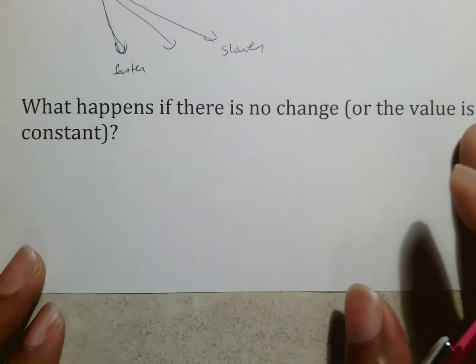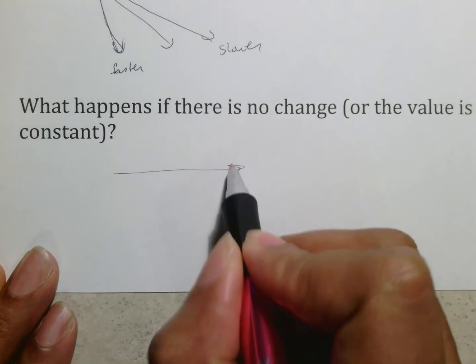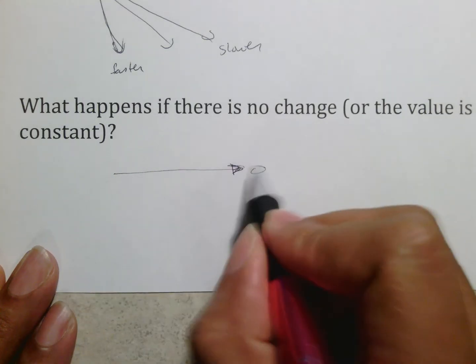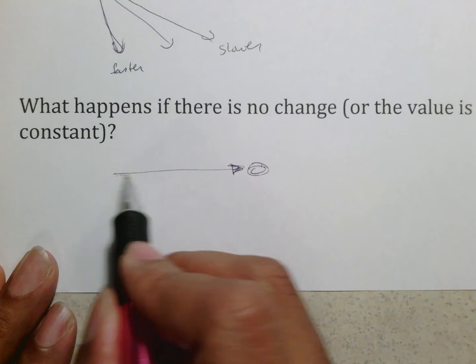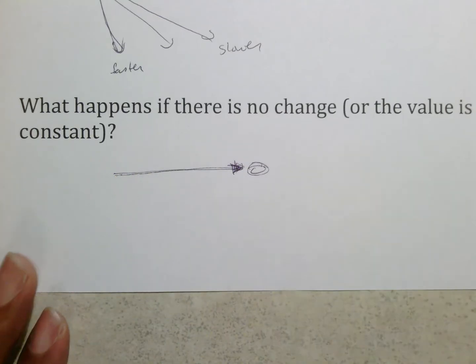What happens if there is no change or the value is constant? That means as time goes on, it's going to go straight. We will eventually call this zero slope. Because zero slope means it is not changing at all. Time just moves forward kind of like a flat line. And then that's going to be all that you see.